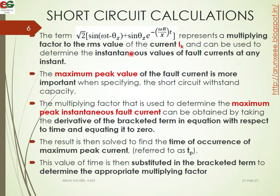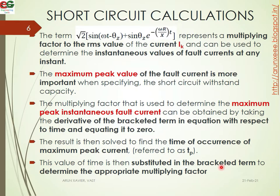The maximum peak instantaneous fault current occurs at a time referred to as tp. This value of time is substituted back into the bracket term to determine the appropriate multiplying factor. The result gives the time of occurrence of the maximum peak current, and substituting it into the bracket term determines the appropriate multiplying factor.